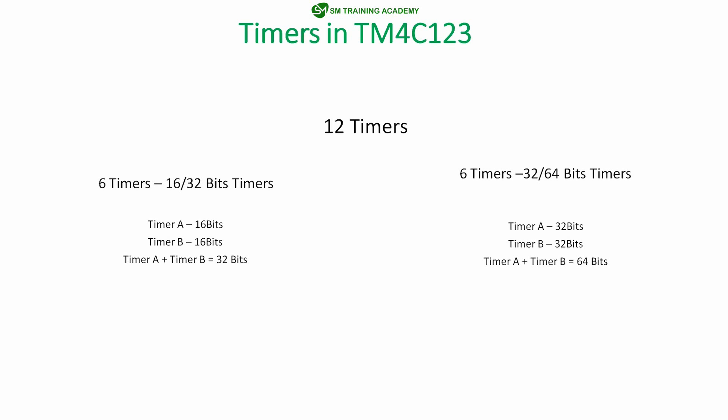In addition, the 6 timers on the left have an 8-bit prescaler. Adding this 8-bit prescaler to the 16-bit timer, each individual timer — Timer A or Timer B — can be used as a 24-bit timer. On the right, the 32/64-bit timers also have a 16-bit prescaler, so each individual Timer A and Timer B on the right can act as a 48-bit timer individually. If you don't need a 64-bit timer, you can use a 48-bit timer on the right; if you don't need a 32-bit timer on the left, you can use individual timers as 24-bit timers.